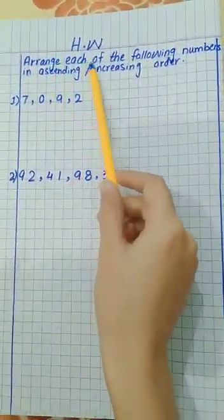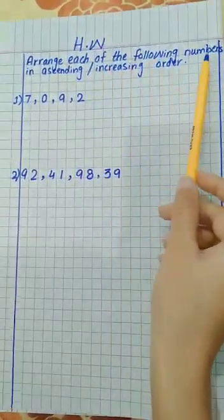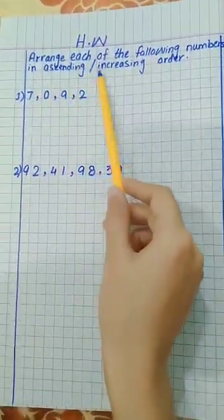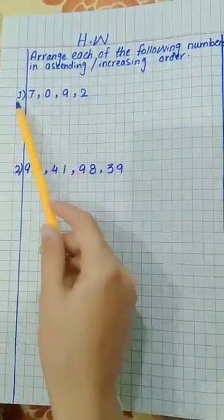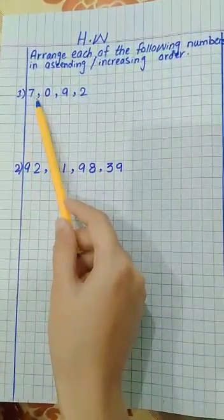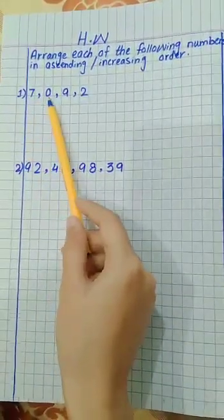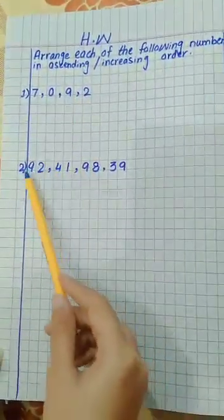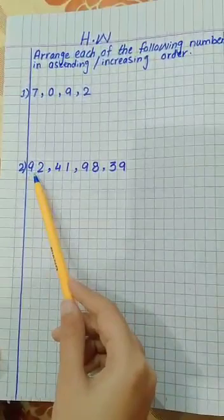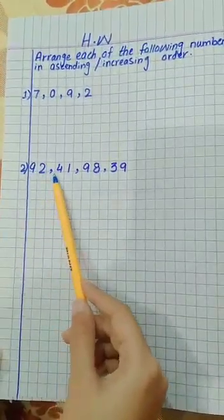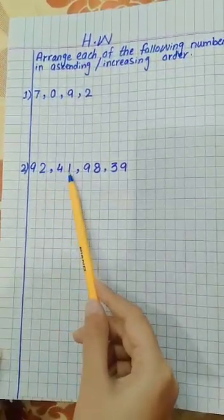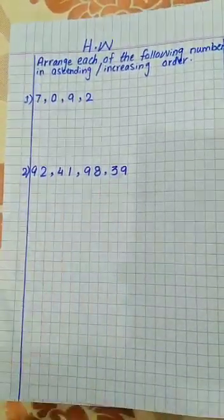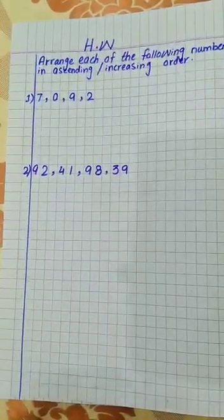Now this is your homework. Arrange each of the following numbers in ascending or increasing order. Number one: 7, 0, 9, 2. Number two: 92, 41, 98, 39. Thank you.